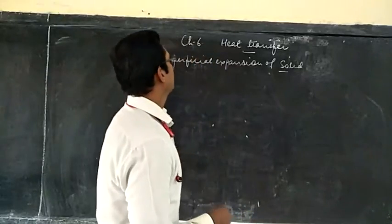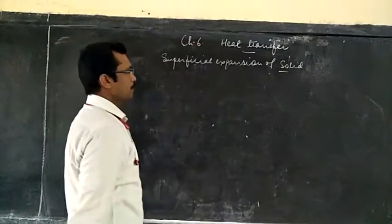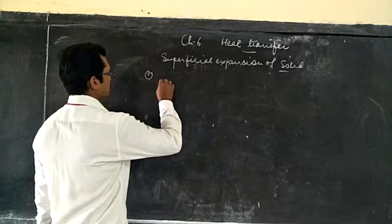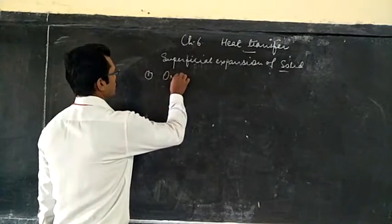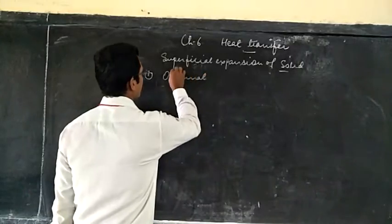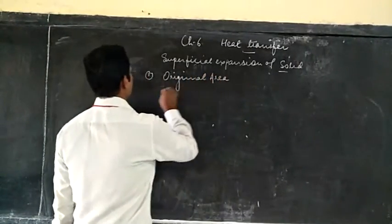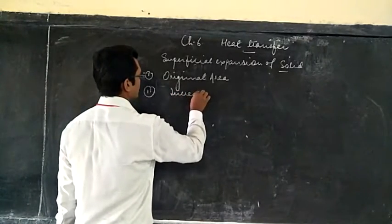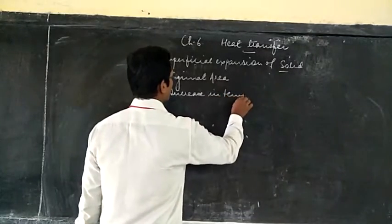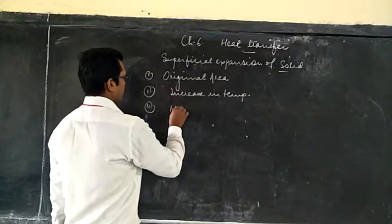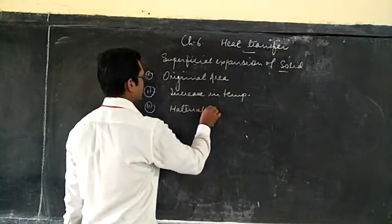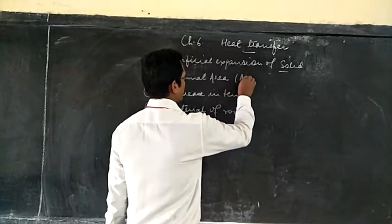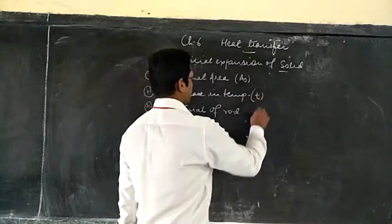Let us see on what factors Superficial Expansion depends. Superficial Expansion depends on three factors: Original Area, Increase in Temperature, and Material of the Plate. Original Area is denoted as A₀ and Increase in Temperature is T.